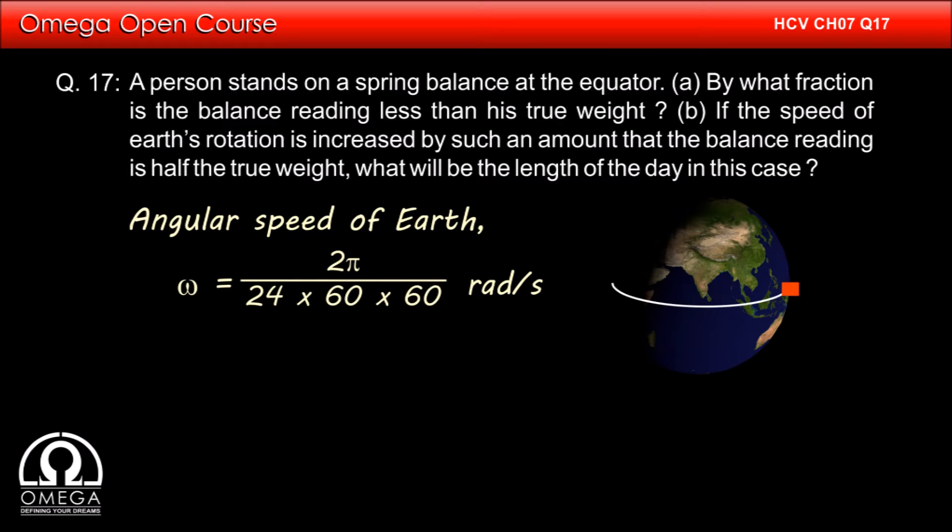Due to Earth's rotation, the particle kept on the equator will experience a centrifugal force of magnitude mω²R, where R is the radius of the Earth. The change in the weight of the particle is due to this force. Hence, change in its weight is equal to this centrifugal force.